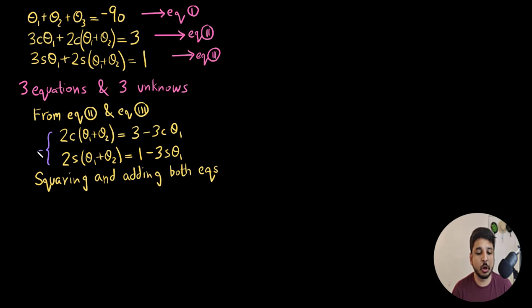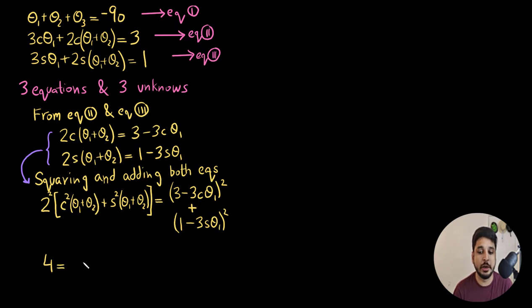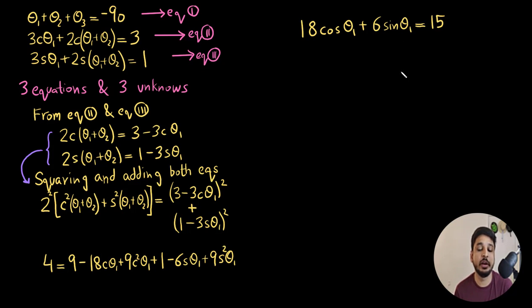So fast forwarding very quickly. I'm just manipulating with the equations, squaring the equations up, adding the equations up. And I get to this point where I get 18 cosine of theta 1 plus 6 sine of theta 1 equals to 15. Now in order to solve this, there is a very nice technique that you can use.